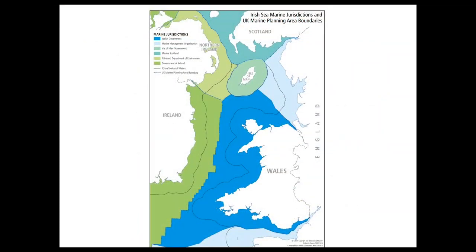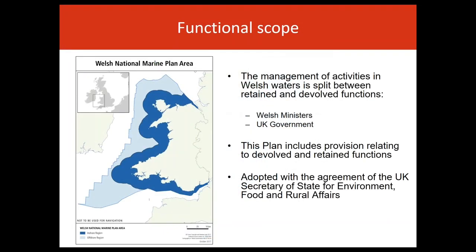Marine planning is a devolved function in the United Kingdom. Welsh ministers are responsible for preparing a marine plan for Welsh waters, highlighted in the area in blue. Respective governments have been working closely over the last few years to ensure planning regimes complement each other, as each has been developed to slightly different timescales. The Welsh marine plan area is adjacent to two English marine regions — the north-west and south-west plan areas — and draft plans for these regions were consulted on in spring 2020. It also shares boundaries with Northern Ireland, the Isle of Man, and the Republic of Ireland, which also consented on their plan this spring. The management of activities in Welsh waters is split between retained and devolved functions, with some areas the responsibility of Welsh ministers, and other functions such as defence and large-scale developments being retained by UK government.